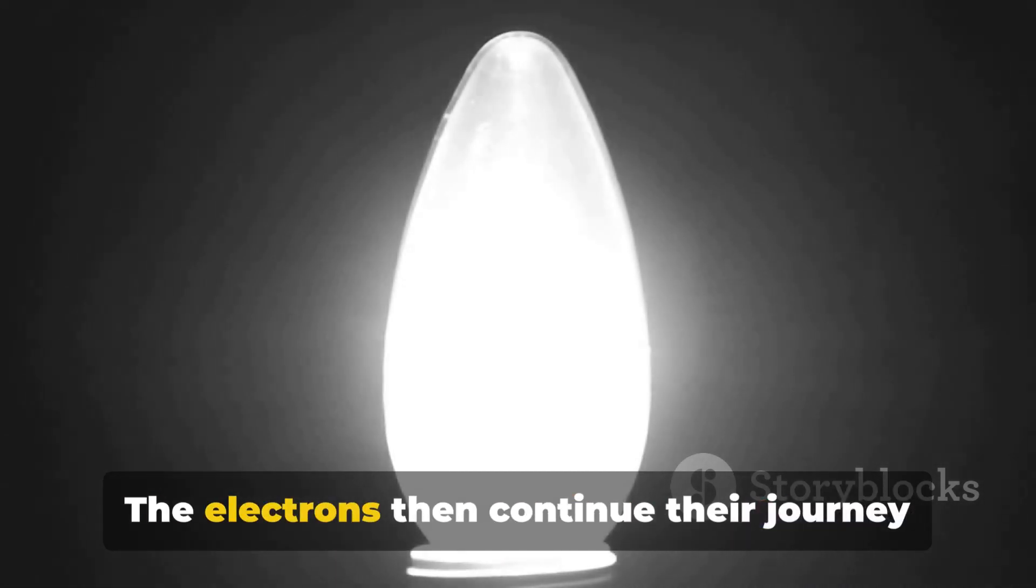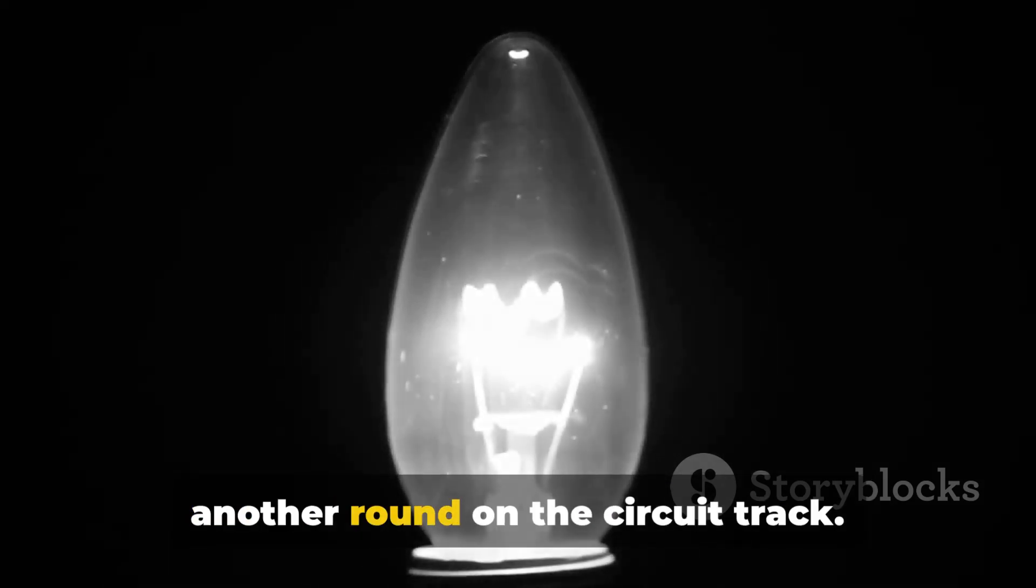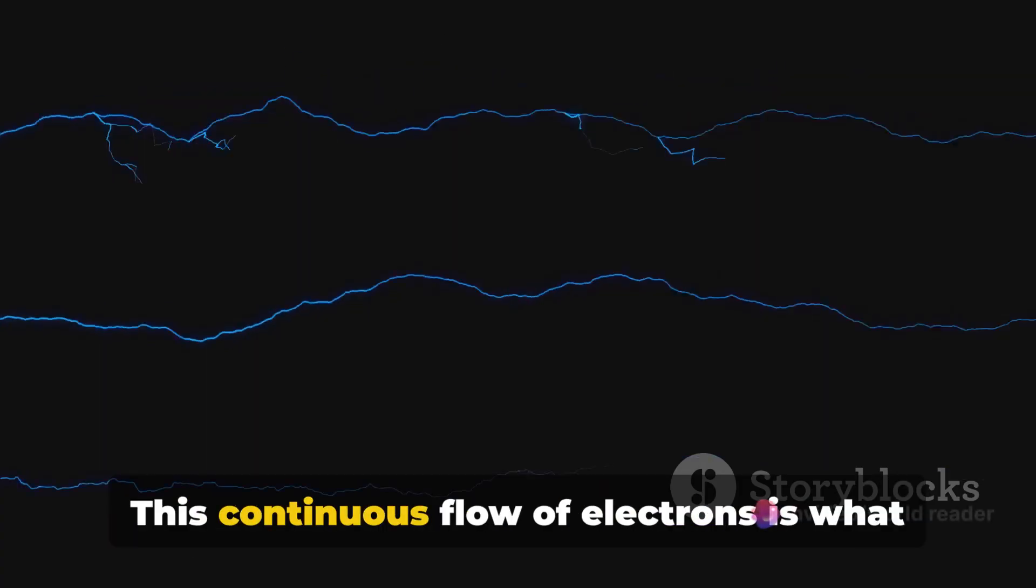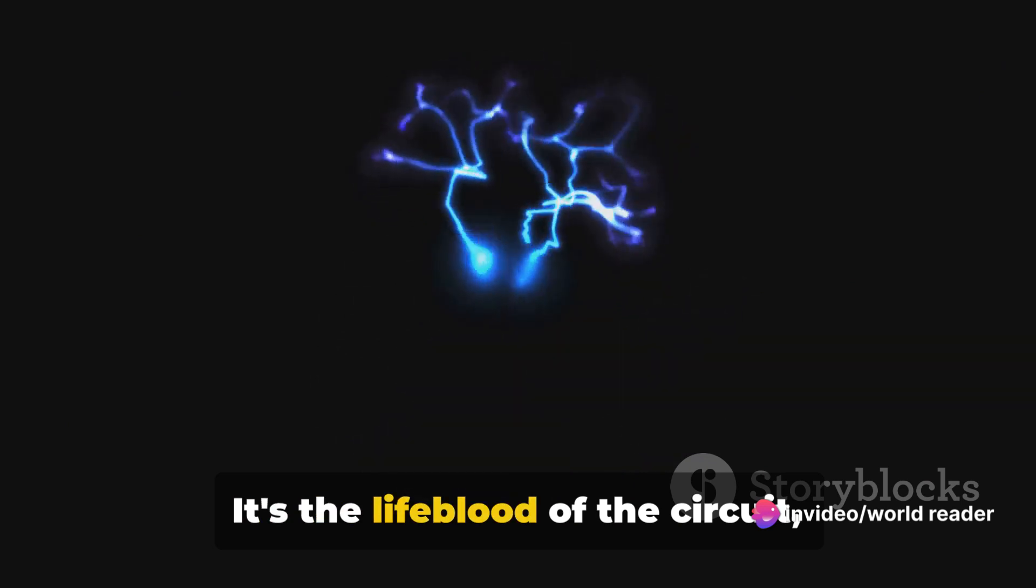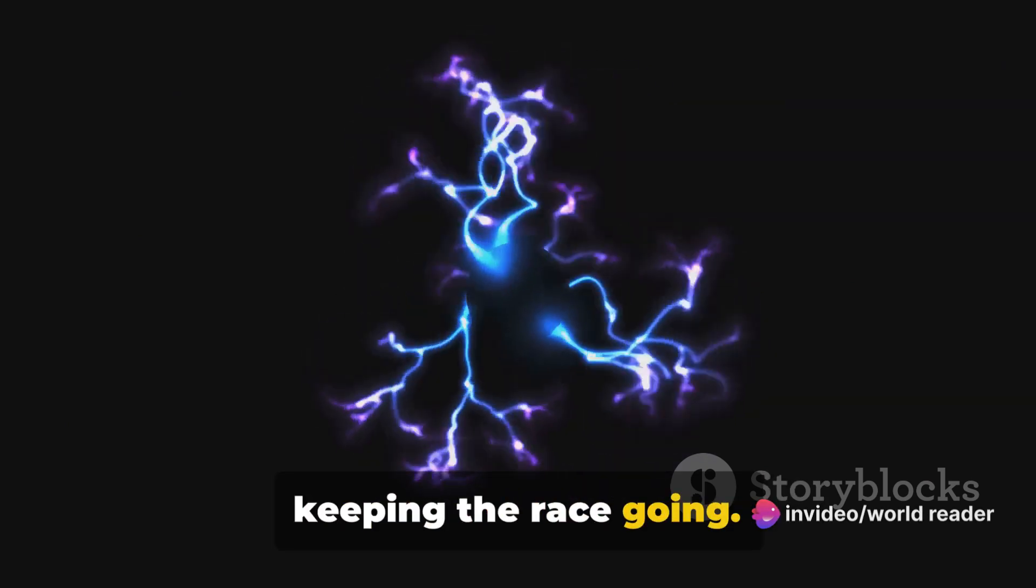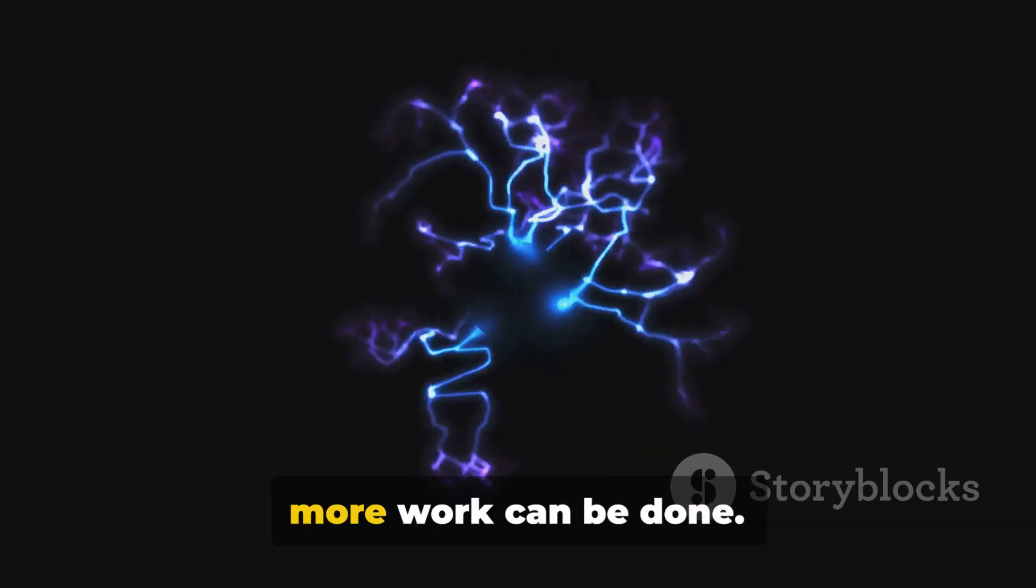But the race isn't over yet. The electrons then continue their journey back to the power source ready for another round on the circuit track. This continuous flow of electrons is what we call current. It's the lifeblood of the circuit keeping the race going. The more electrons racing around the circuit, the higher the current and the more work can be done.